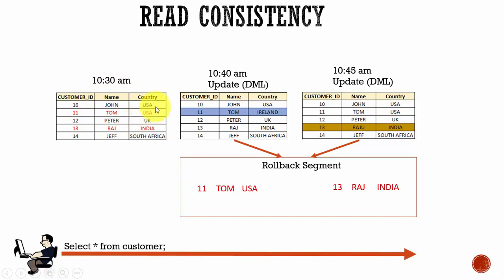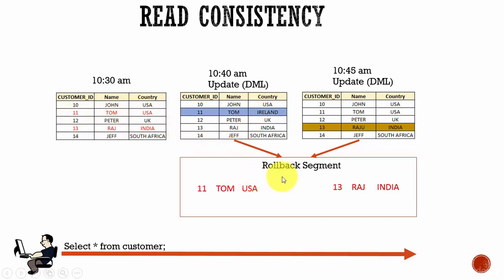At 10:40, some other user performed an update where he updated customer ID 11 and changed the country from USA to Ireland. Oracle database maintained a copy of the pre-modified data — it took customer ID 11 with USA and stored it in the rollback segment.